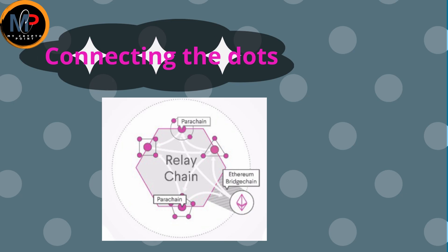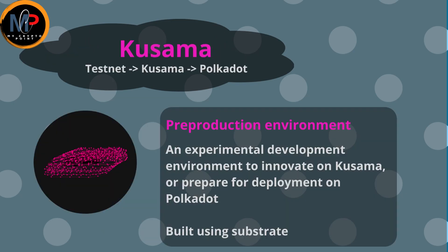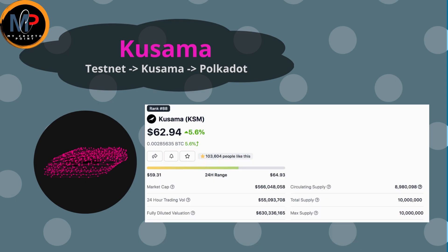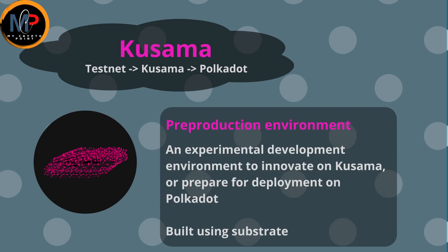Next, let's quickly look at Kusama, whose symbol is a bird. Kusama is the Canary Network for Polkadot — it warns of issues to keep things safe for developers. Kusama is a 500 million dollar pre-production environment for Polkadot, built using Substrate, and is one example of the hard work the Polkadot team has put in.